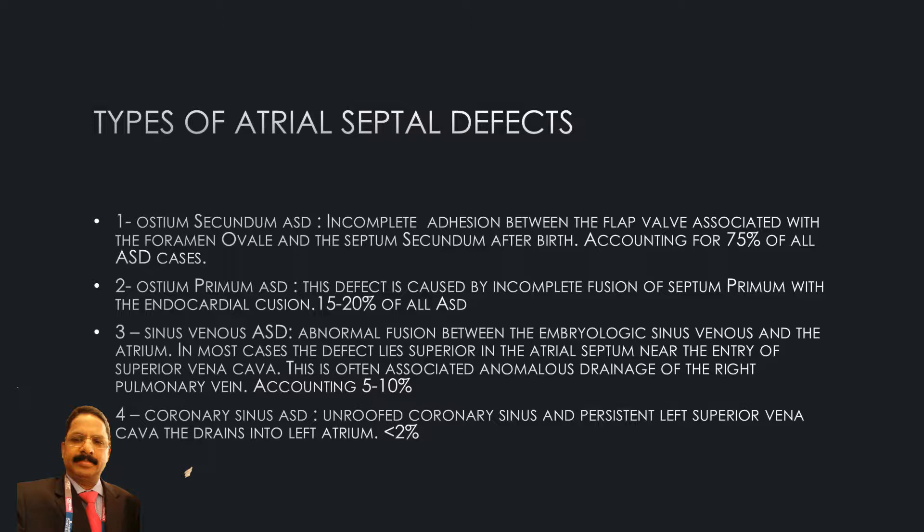Number three: sinus venosus ASD. This is abnormal fusion between the embryological sinus venosus and the atrium. In most cases, the defect lies superiorly in the atrial septum, near the entry of the superior vena cava. It is often associated with anomalous drainage of the right pulmonary vein, and accounts for five to ten percent of cases.